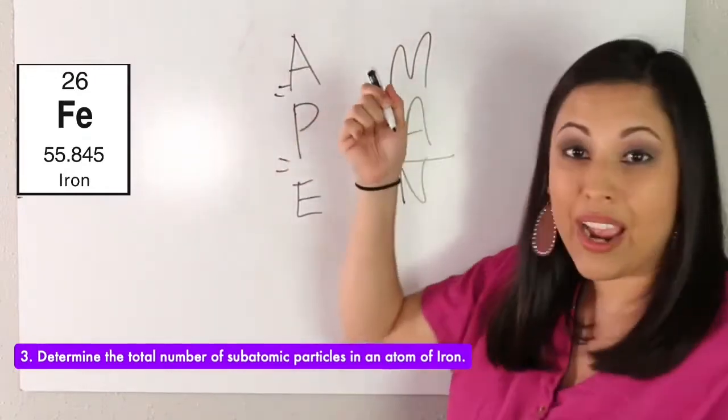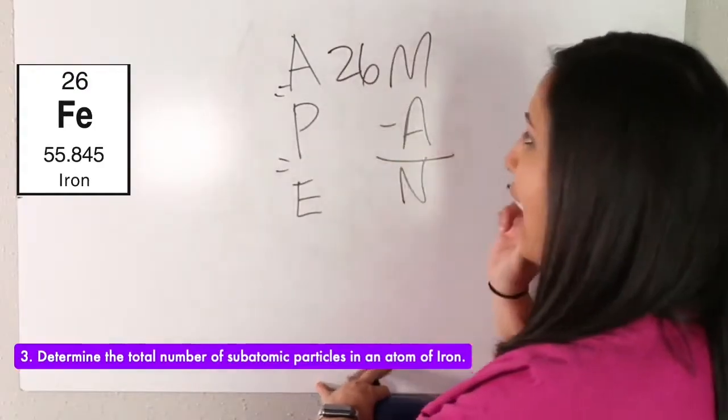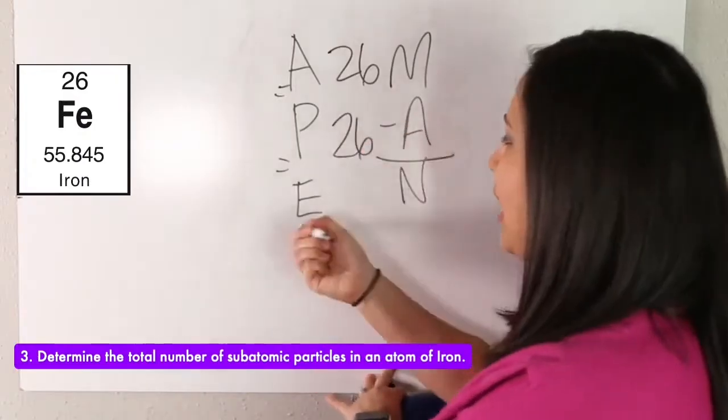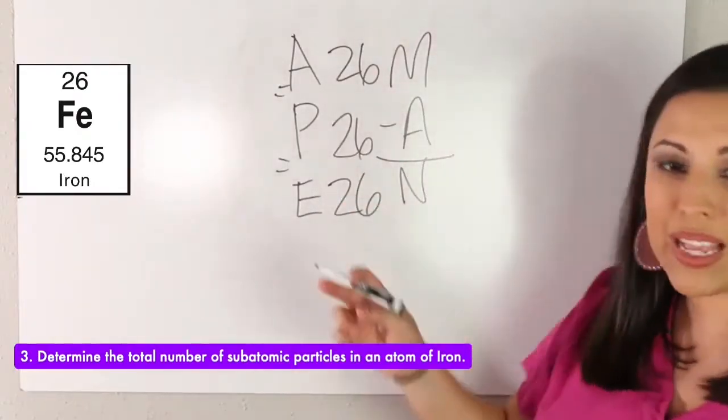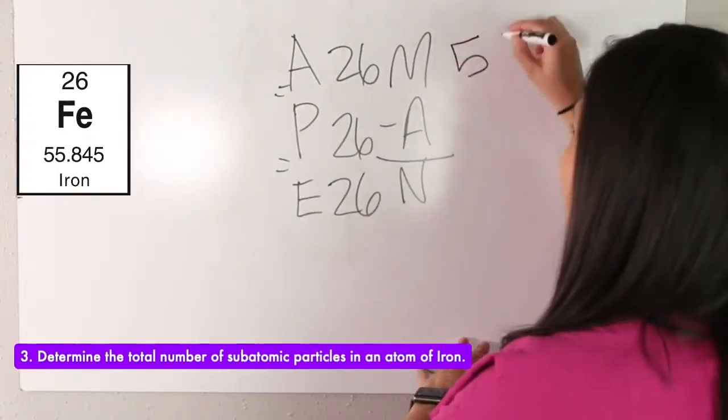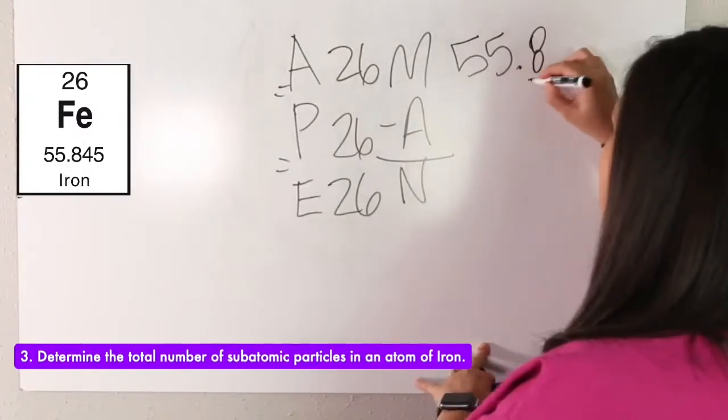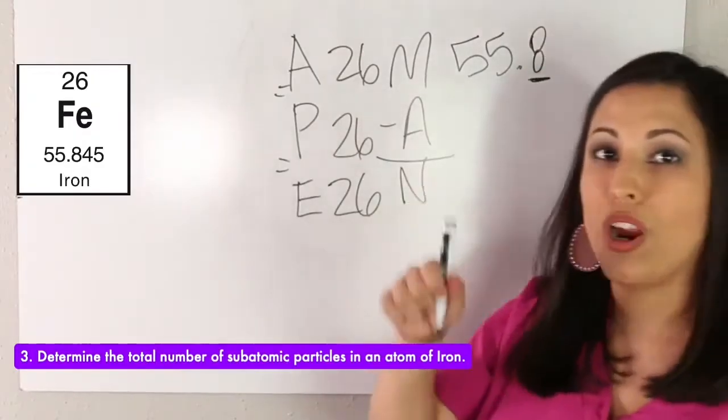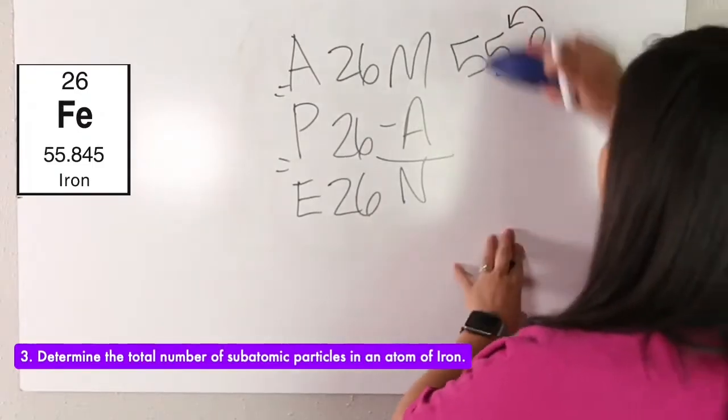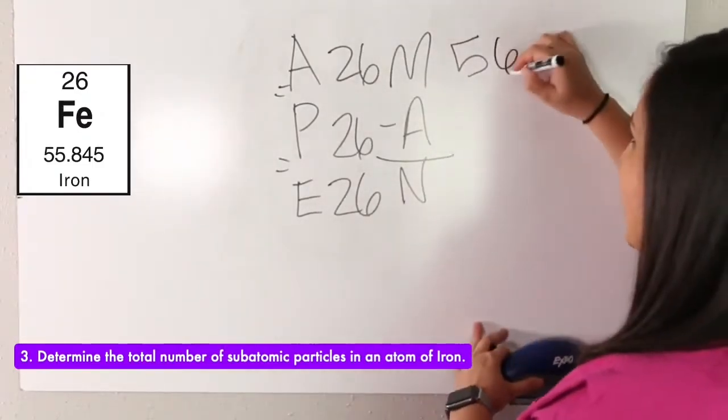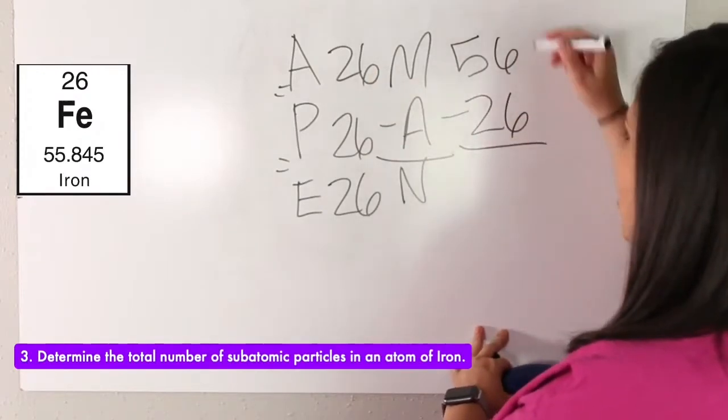Okay, iron. Our atomic number is 26. So how many protons are we going to have? 26. How many electrons? 26. All the same. And what is our mass of iron? It is 55.845. So this number eight, five or more, raise the score. We're going to add one to this number. So we have 56 minus our A. How many neutrons do we have? 30.